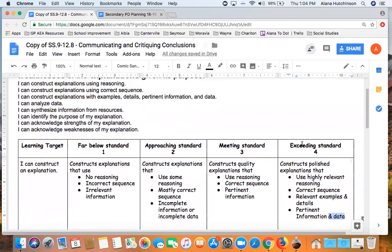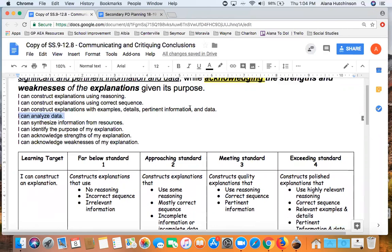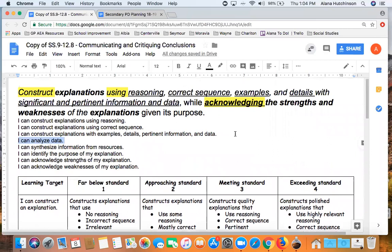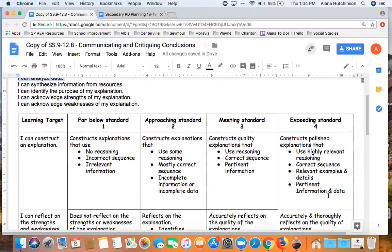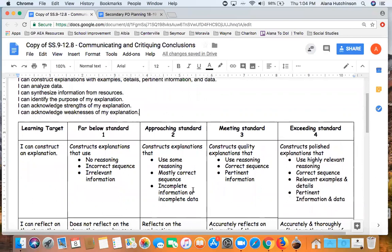So if you go back up to my learning targets, you can see one of my learning targets was I can analyze data. That was an implied learning target. So I felt that it was okay that I was including that as a four and not as proficiency for my students, because I didn't know if I was going to have time to get all of them there. But that was definitely something that I wanted to try to start working on. So that's an example of one of the rubrics.